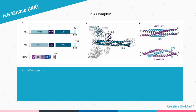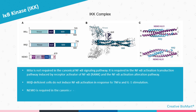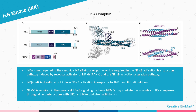IKK-alpha is not required in the canonical NF-Kappa-B signaling pathway. It is required in the NF-Kappa-B activation transduction pathway induced by receptor activator of NF-Kappa-B, and in the non-canonical NF-Kappa-B activation pathway. IKK-beta-deficient cells do not induce NF-Kappa-B activation in response to TNF-alpha and IL-1 stimulation. NEMO is required in the canonical NF-Kappa-B signaling pathway; it may mediate the assembly of IKK complexes through direct interactions with IKK-beta and IKK-alpha, and also facilitate the interaction of I-Kappa-B proteins with IKK kinase complexes.